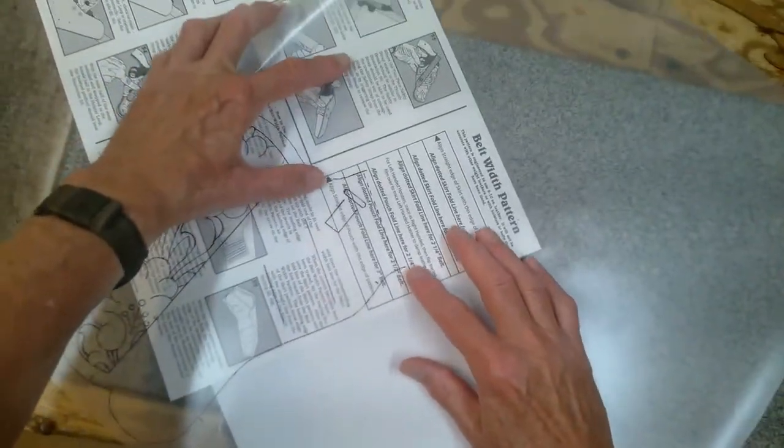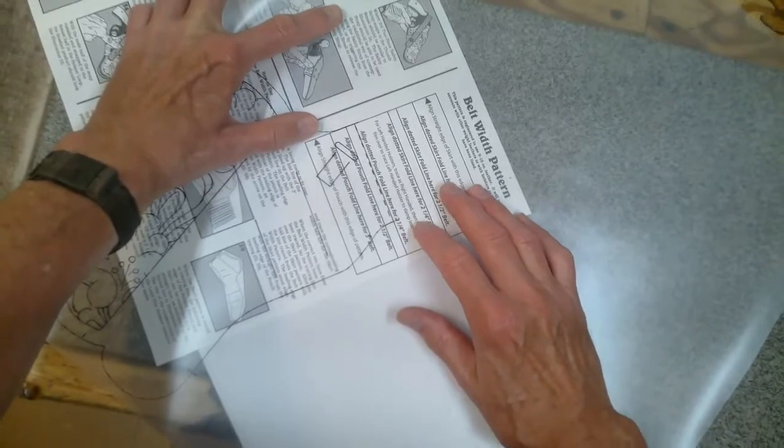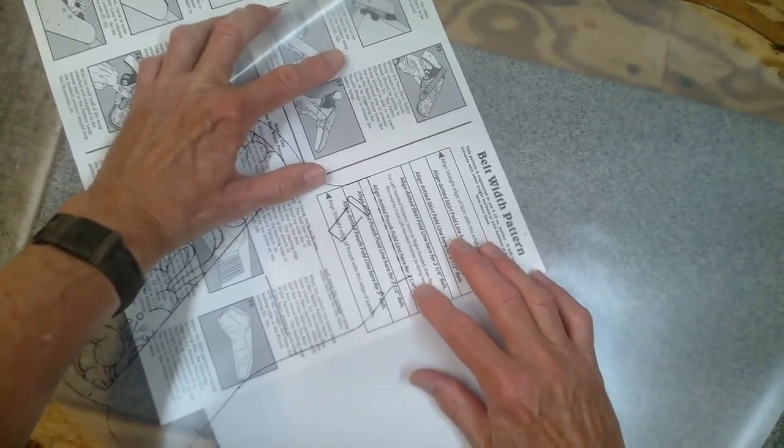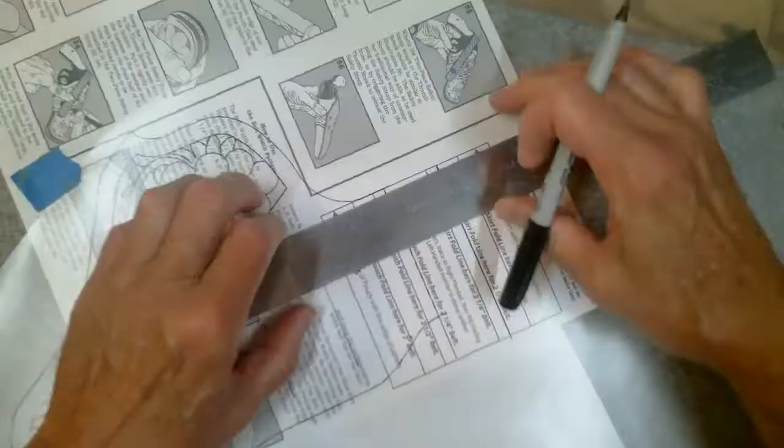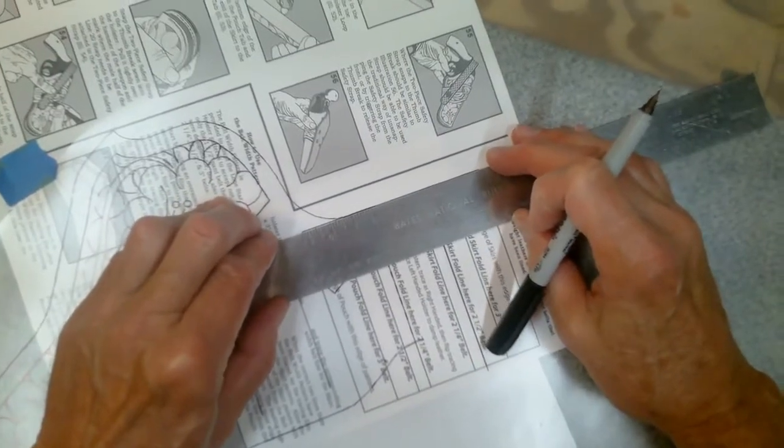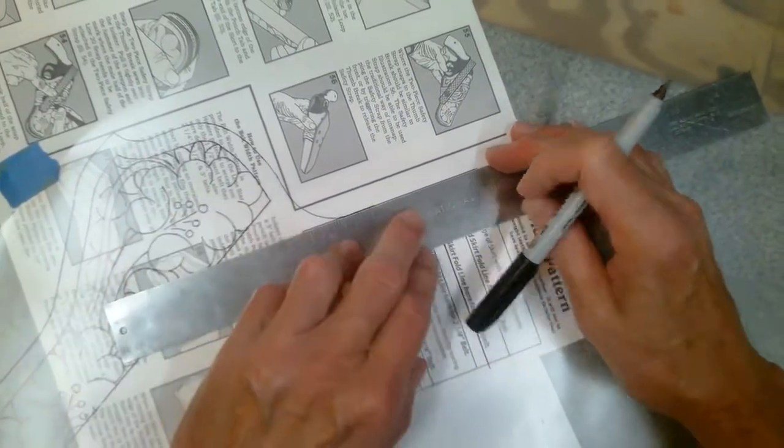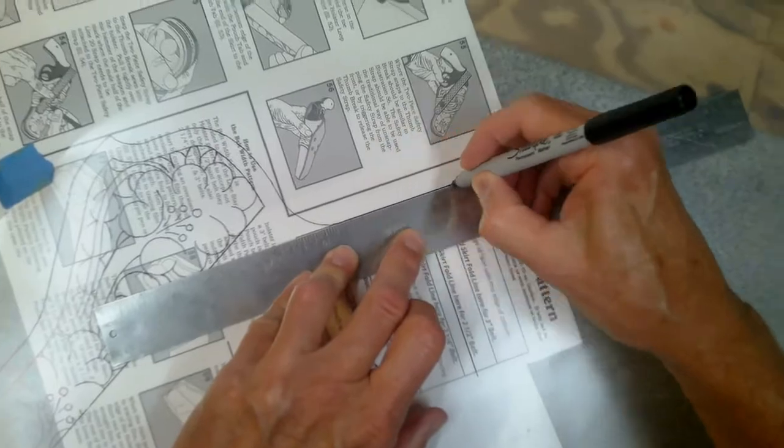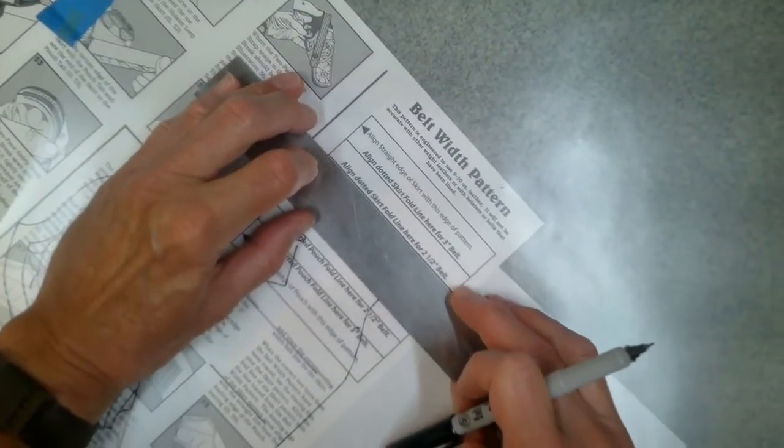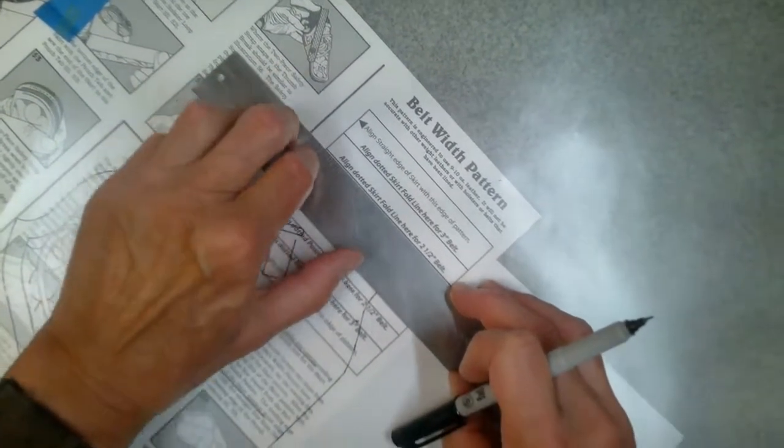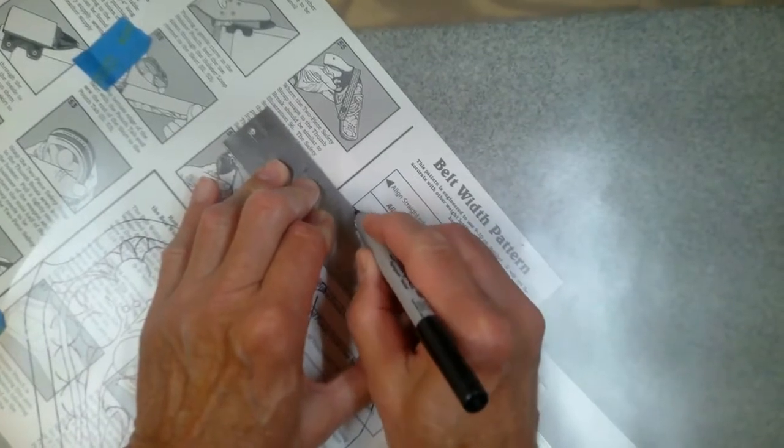Align the tracing of the holster pouch fold line with the belt line pattern two and a quarter inch line. With a marker, trace the leading edge of the width pattern to the tracing film. Also trace the two and a quarter inch line from the skirt side of the width pattern.